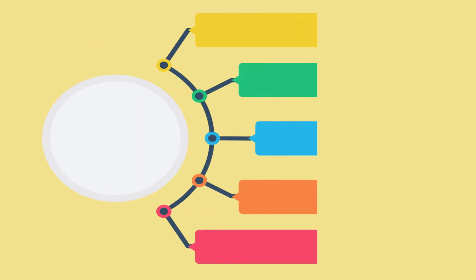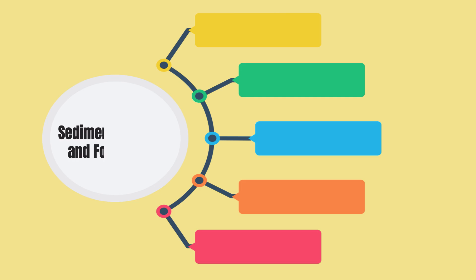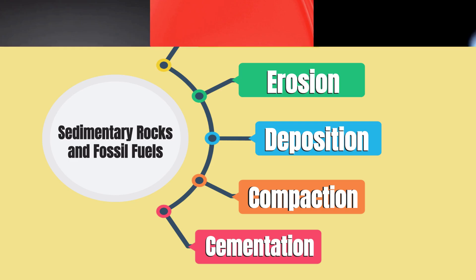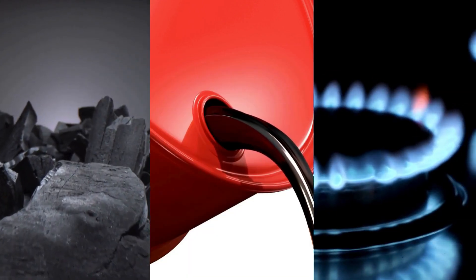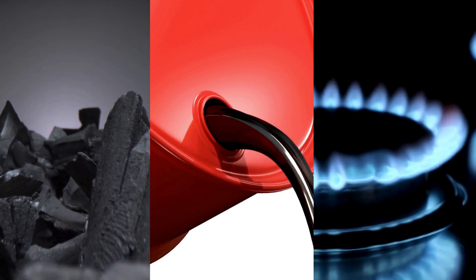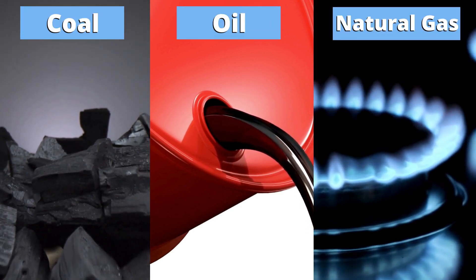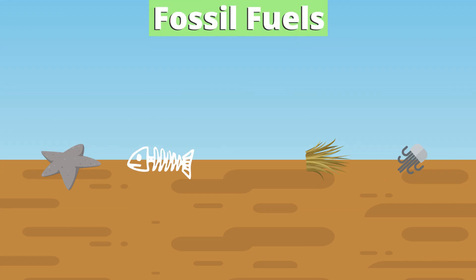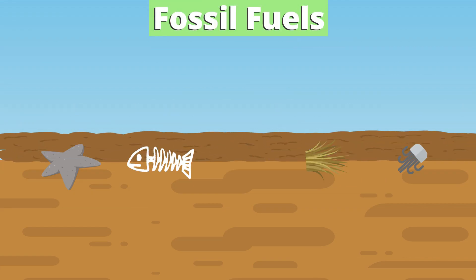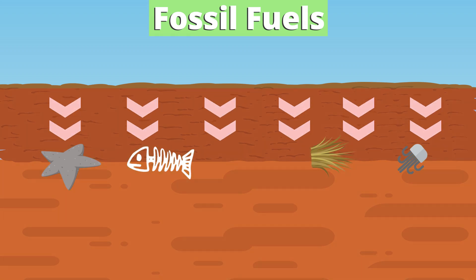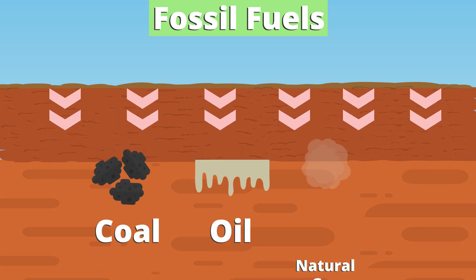Today, we explored the step-by-step process that led to the formation of sedimentary rocks and fossil fuels: weathering, erosion, deposition, compaction, and cementation. We learned that over many years, these natural forces transform ancient plants and animals into valuable resources like coal, oil, and natural gas. Fossil fuels are formed from the remains of dead plants and animals buried under layers of sediment. Through the powerful forces of heat and pressure, these buried materials are transformed into the fossil fuels we rely on today.